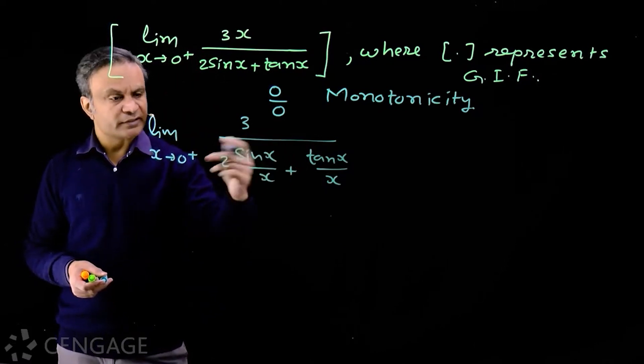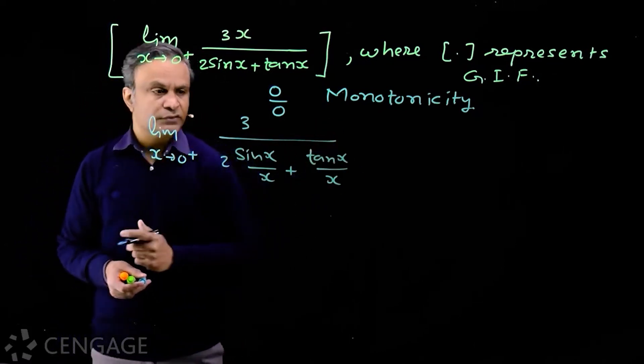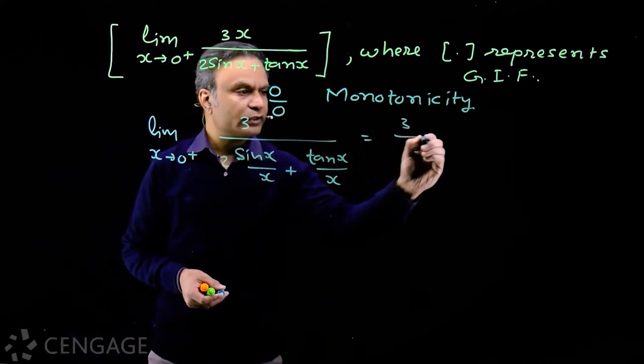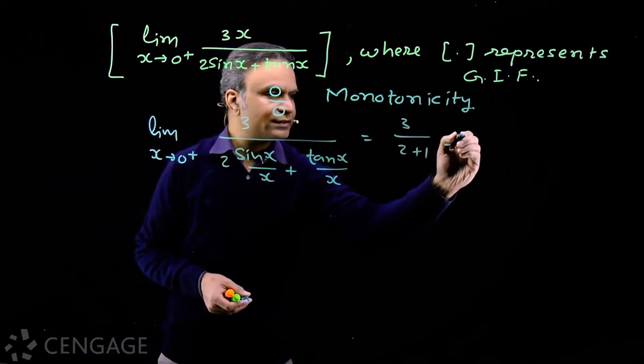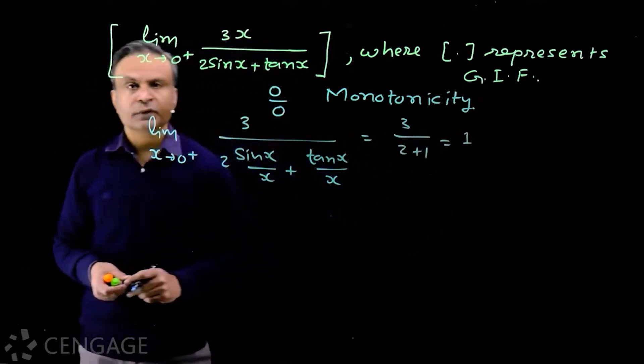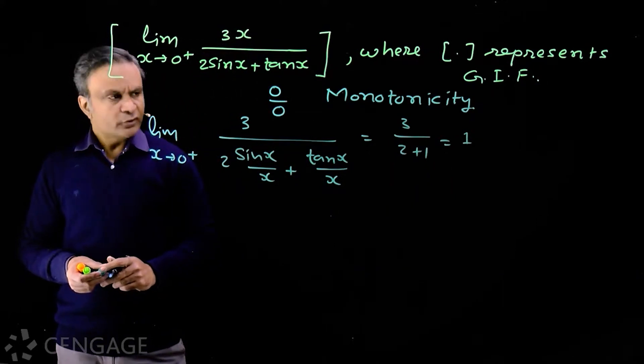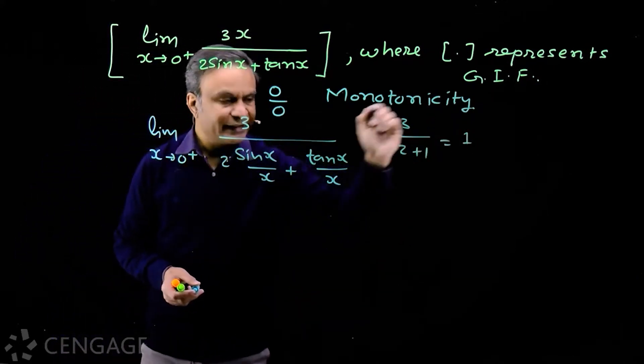Limit x tends to zero plus sine x upon x is 1. Also limit x tends to zero plus tan x upon x is 1. So we have limiting value 3 upon 2 plus 1, which is equal to 1.